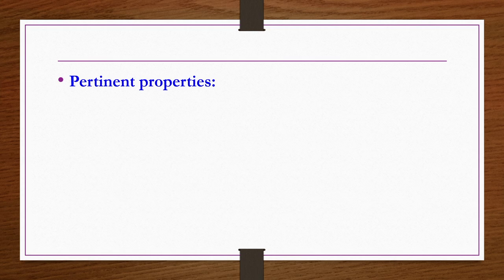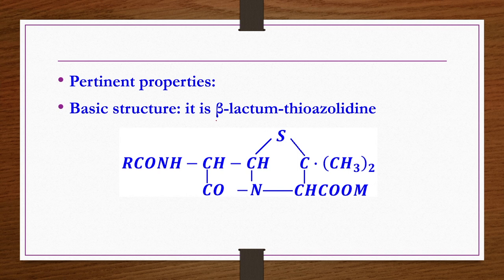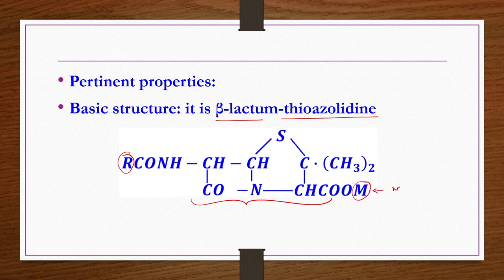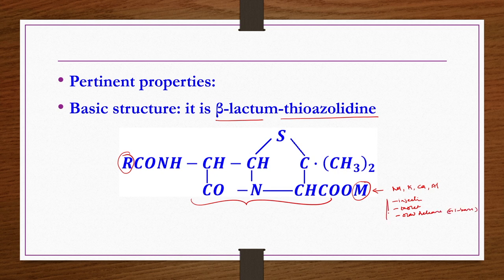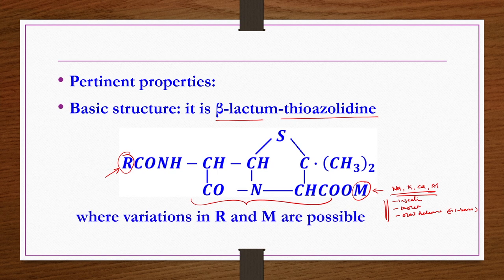Penicillin's basic structure is a beta-lactam thiazolidine ring system — two rings, where M in the main ring is usually sodium, potassium, calcium, or aluminium, depending on the application (direct injection, oral tablet, or slow-release oil-based injection). Depending on what type of side chain R is present, different types of penicillins are possible. A few examples of drugs produced by fermentation include penicillin, terramycin, streptomycin, chloromycin, neomycin, tetracyclines, aureomycin, bacitracin, etc.